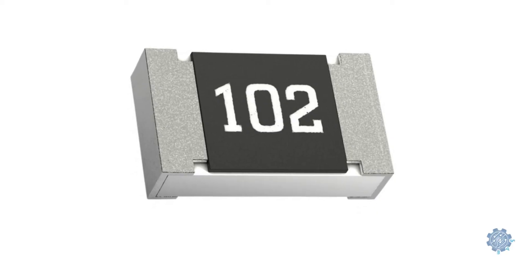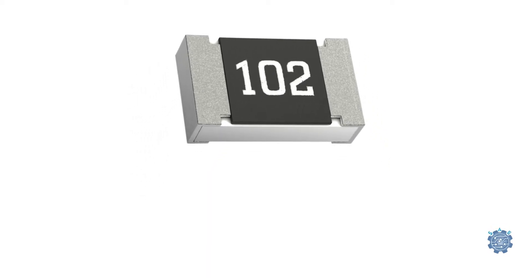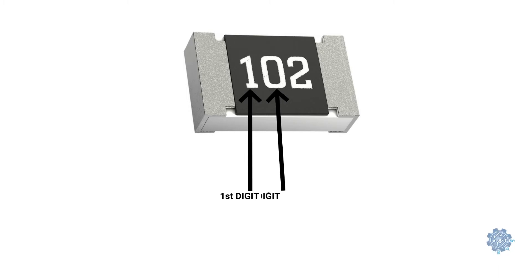In the case of the code with 3 characters, the first two numbers indicate the significant digits and the third character indicates the multiplier. The multiplier character shows the power of 10, which is to be multiplied with the value from the first two characters.